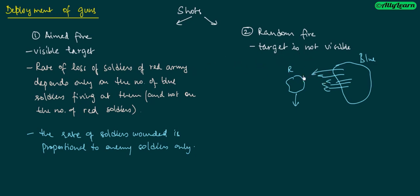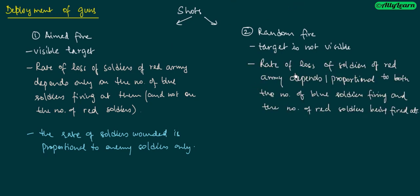In random fire, the rate of loss of soldiers of the red army will be proportional to both the number of blue soldiers firing and the number of red soldiers being fired at. So in random fire, the rate of soldiers wounded is proportional to both numbers of soldiers.